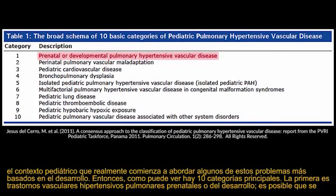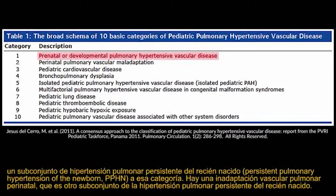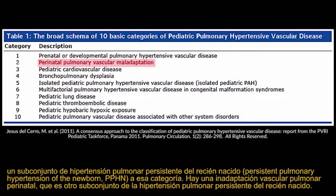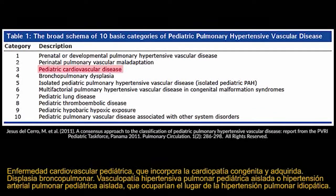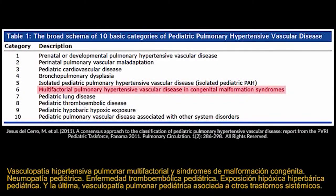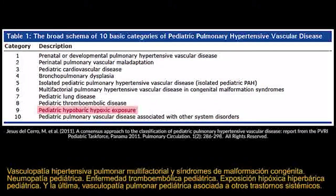The 10 pediatric categories are: prenatal or developmental pulmonary hypertension vascular disorders; perinatal pulmonary vascular maladaptation (a subset of persistent pulmonary hypertension of the newborn); pediatric cardiovascular disease incorporating congenital and acquired heart disease; bronchopulmonary dysplasia; isolated pediatric pulmonary hypertensive vascular disease (replacing idiopathic pulmonary hypertension); multifactorial pulmonary hypertensive vascular disease and congenital malformation syndromes; pediatric lung disease; pediatric thromboembolic disease; pediatric hypobaric hypoxic exposure; and pediatric pulmonary vascular disease associated with other systemic disorders.